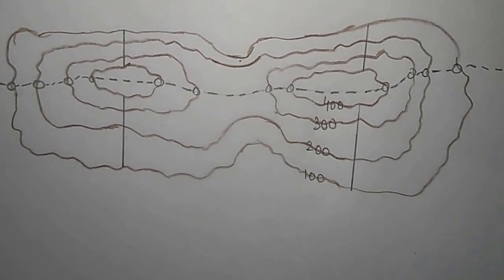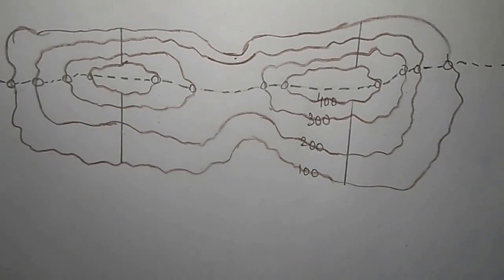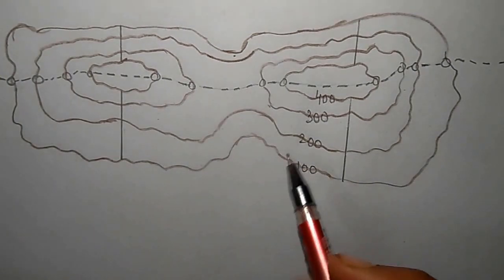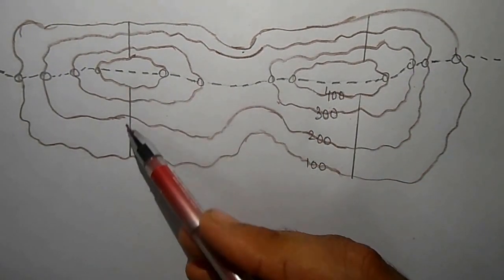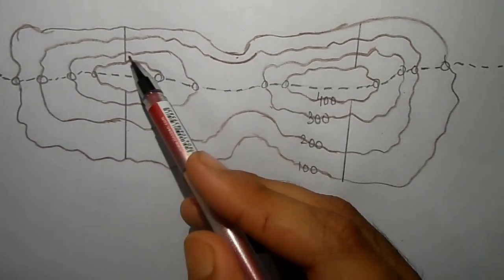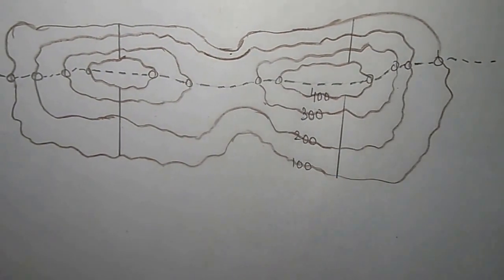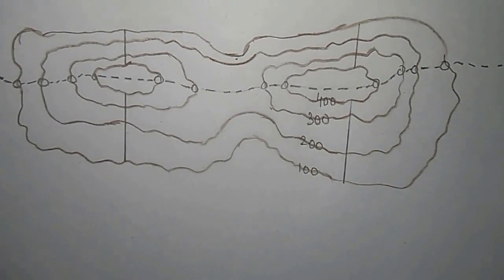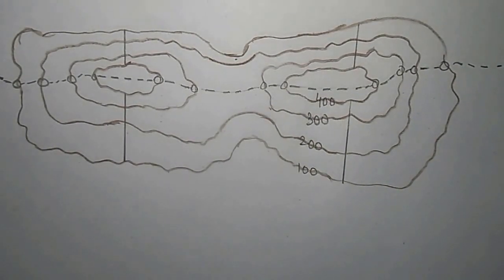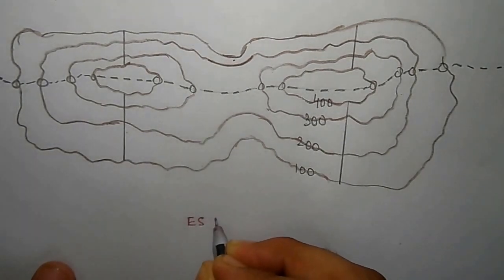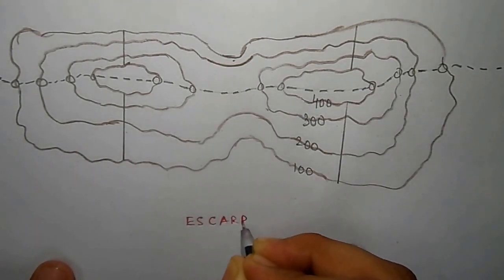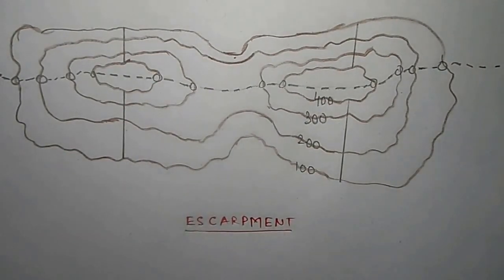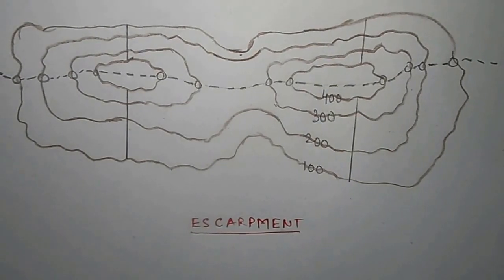Now I will show you how to find an escarpment or a scarped ridge. In this particular figure, we have a gentle slope on one side and a steep slope on the other side. Ridges which have a steep slope on one side and a gentle slope on the other side are called escarpments — it is as simple as that. If you find something like this on the topographical map, this is an escarpment.